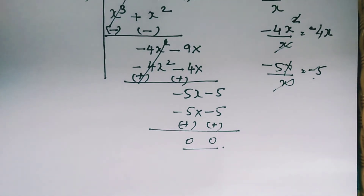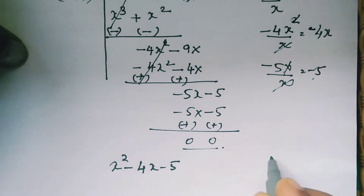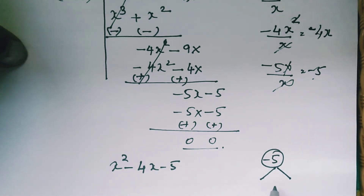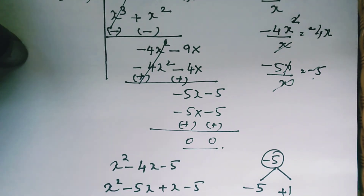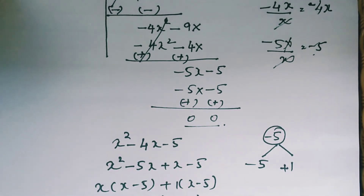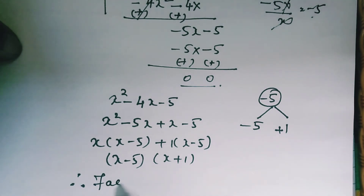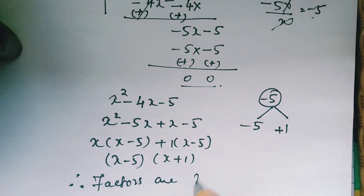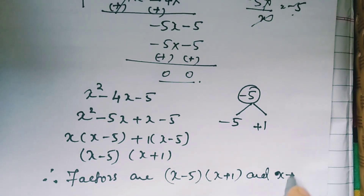From the cubic polynomial, we have arrived at the quadratic polynomial x square minus 4x minus 5. Now we need to find the factors of minus 5. We can take 5 and 1, so we write minus 5 and plus 1, replacing minus 4x with minus 5x plus x. Taking common factors, we get x minus 5 and x plus 1 as the two factors. So all three factors together are x minus 5, x plus 1, and x plus 1.